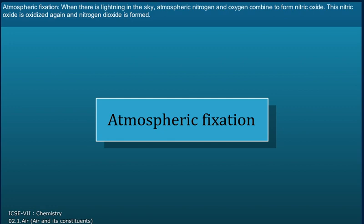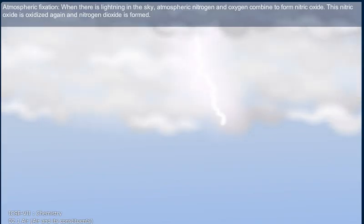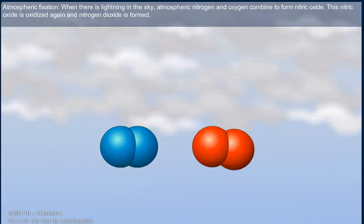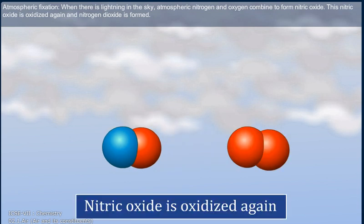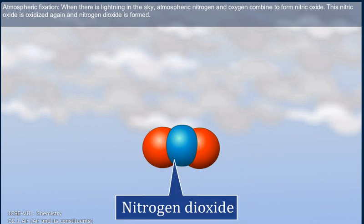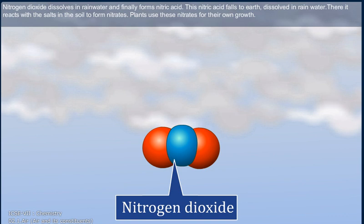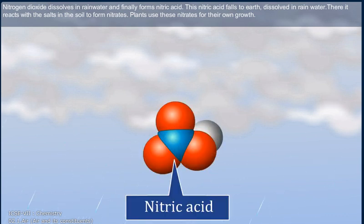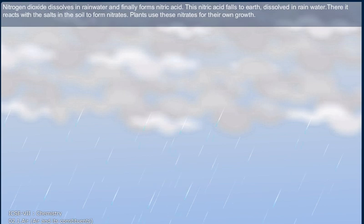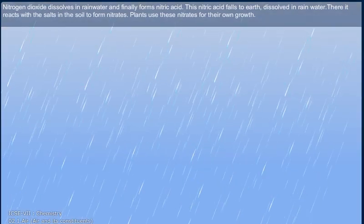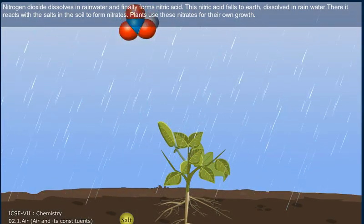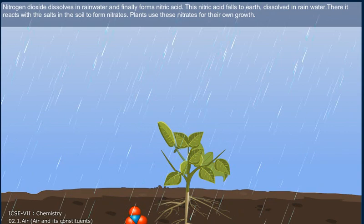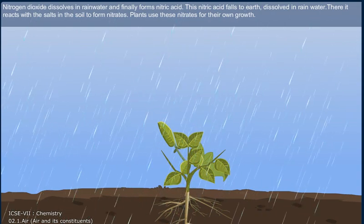Atmospheric fixation: when there is lightning in the sky, atmospheric nitrogen and oxygen combine to form nitric oxide. This nitric oxide is oxidized again and nitrogen dioxide is formed. Nitrogen dioxide dissolves in rainwater and finally forms nitric acid. This nitric acid falls to earth with the rainwater, and reacts with the salts in the soil to form nitrates. Plants use these nitrates for their own growth.